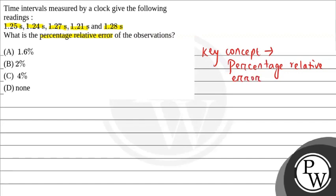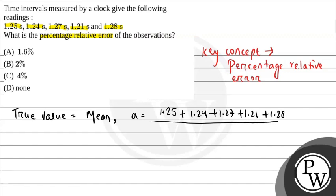To solve this question, we need to have the true value given to us. And we know that the true value is the mean value. So the mean value we represent as A, and this will be the summation of all the individual intervals. That is, 1.25 plus 1.24 plus 1.27 plus 1.21 plus 1.28 divided by the total number of intervals, that is 5. And solving this we get 1.25.